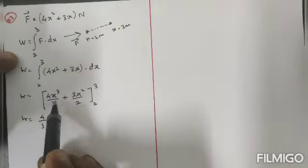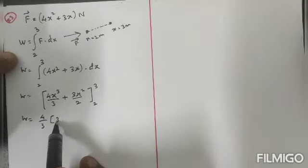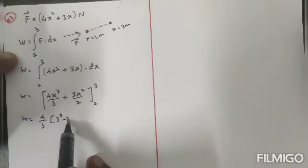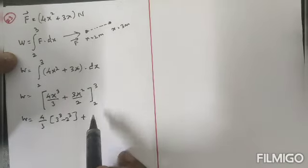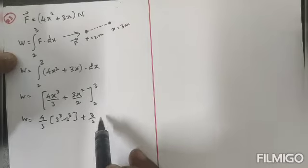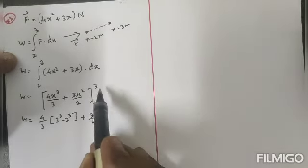So here 4/3 I will take outside, so the remaining is x³, so for x³ individually apply that is 3³ - 2³. Then plus, again this time focus here